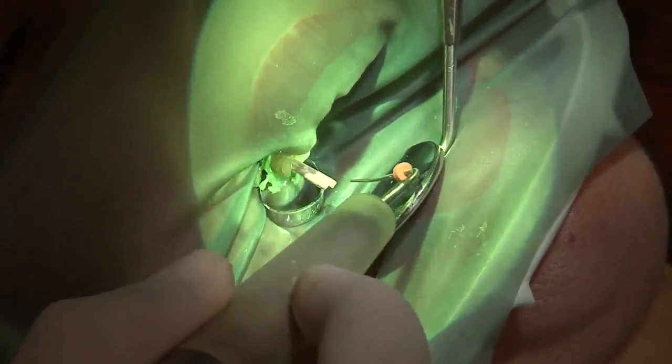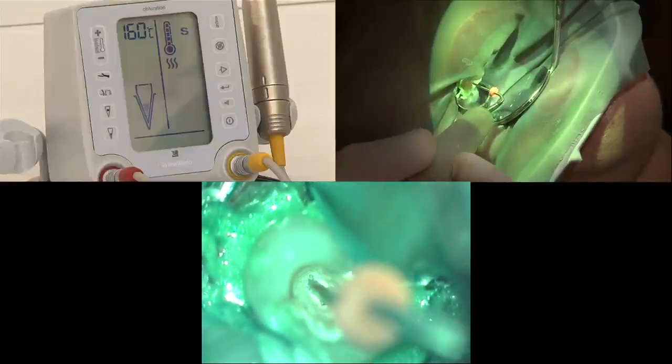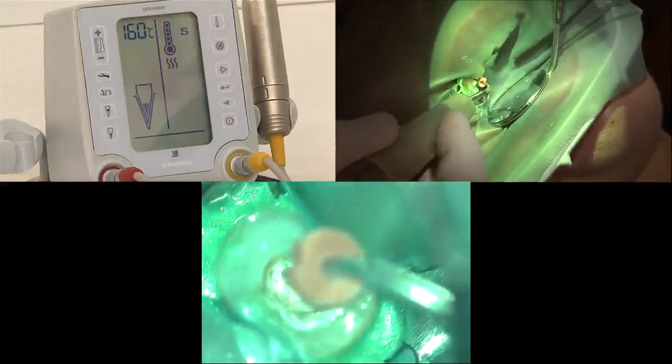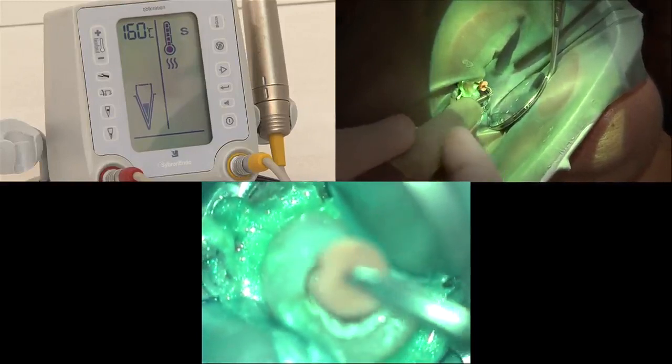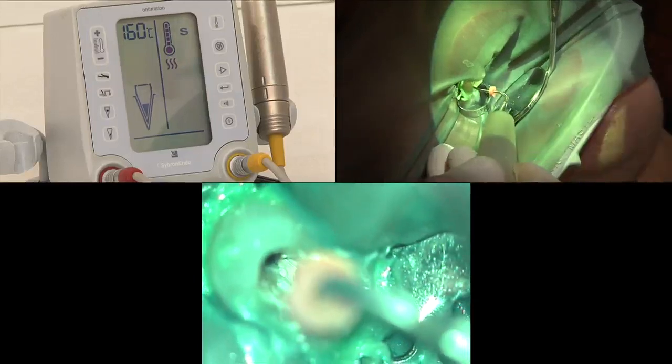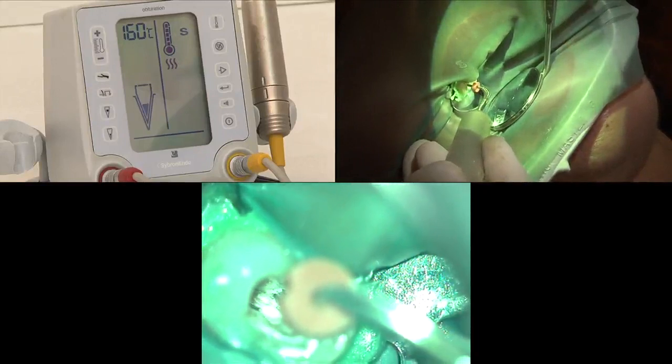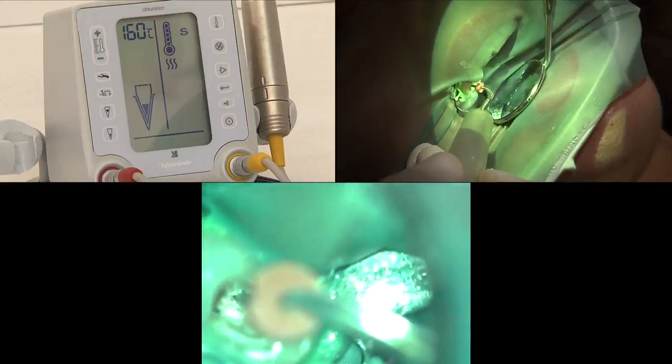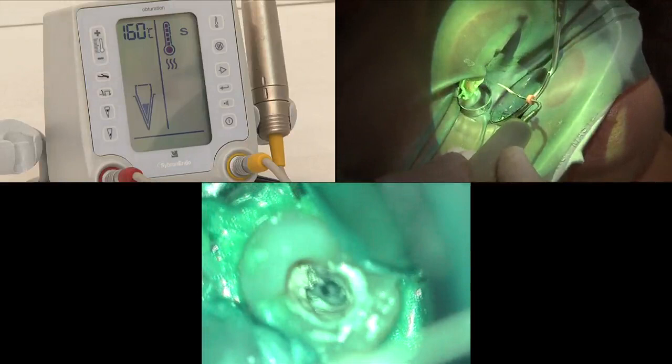160 degrees for the down pack using the System B plugger. At the beginning I cut the master cone at the orifice. I use a hand plugger to seat the orifice in order to create a maximum of hydraulic pressure. Then the System B is pointed in the middle of each canal. The down pack is done in a couple of seconds, two to three seconds. One millimeter prior to the pre-calibrated length, I switch off the power, and I continue until the rubber stop reaches its level. I stop for 10 seconds. The unit will give me a small beep beep sound. And then I activate for one second like a thermocut, and I take back my plugger. My down pack is completed. As you can see on the video, all the isthmus are being filled with the obturation material.